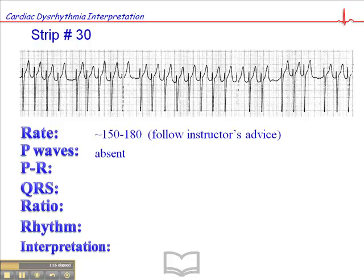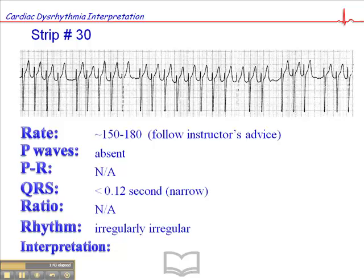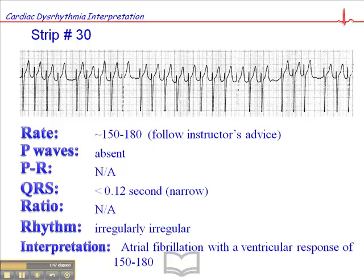Now there are no clearly discernible P-waves here. You may see some glitches, like here and here. Don't get sucked into the glitches. This rhythm is irregularly irregular, and guaranteed you're going to see some artifact between the QRS complexes, but there are no clearly discernible P-waves here, and therefore there's no PR interval. The QRS is narrow — it's less than 0.12 second. The ratio is not applicable. The rhythm is irregularly irregular, and when you have an irregularly irregular rhythm, the interpretation is atrial fibrillation, in this case with a ventricular response of between 150 and 180.